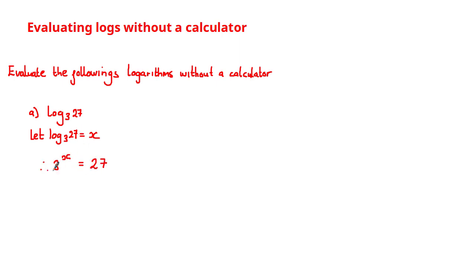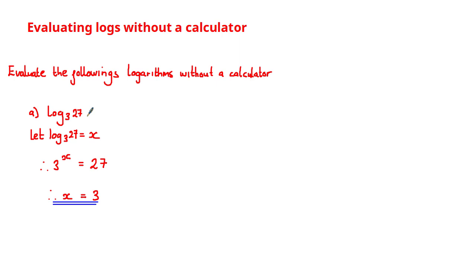Now that we have the power equation, all we have to do is ask: what value does x need to be to satisfy this equation? What power of 3 gives us 27? You should know that 3 cubed gives you 27, so x is equal to 3. Since we set log base 3 of 27 equal to x, log base 3 of 27 is equal to 3, which you can verify with your calculator.